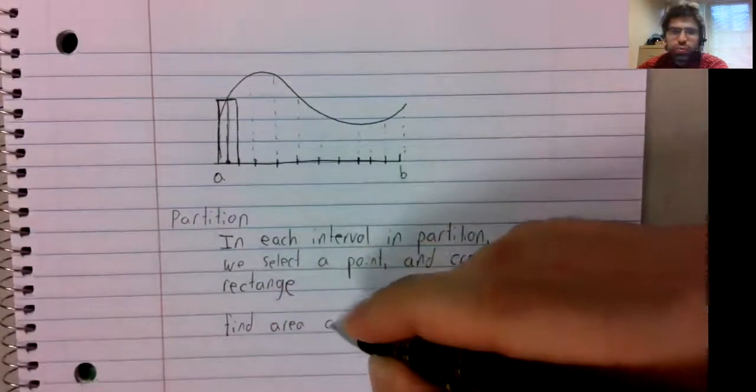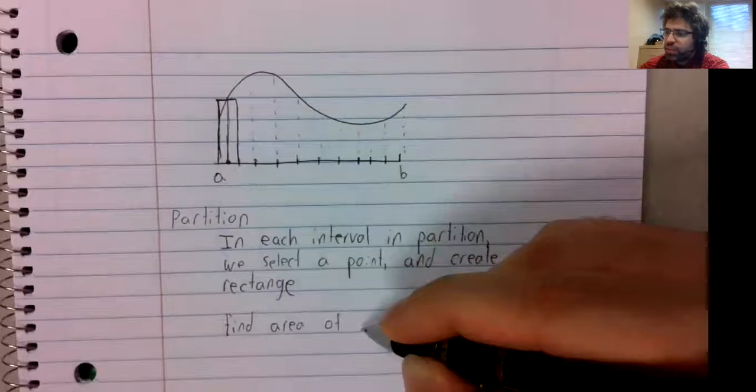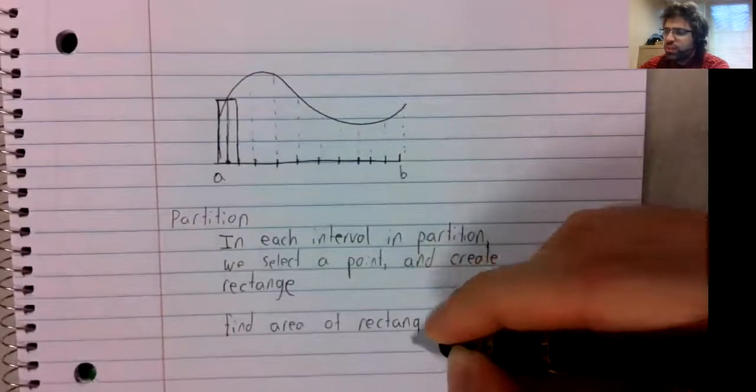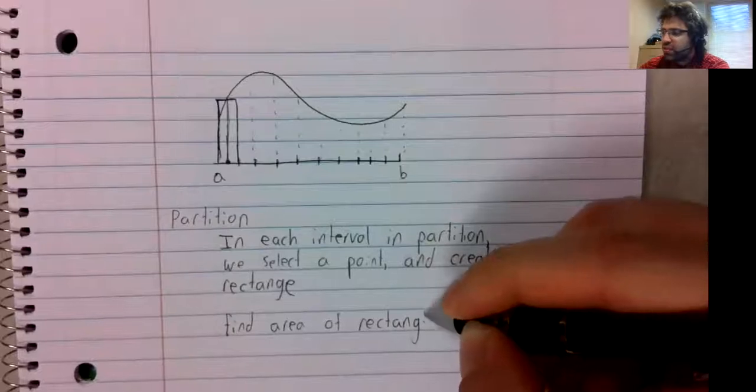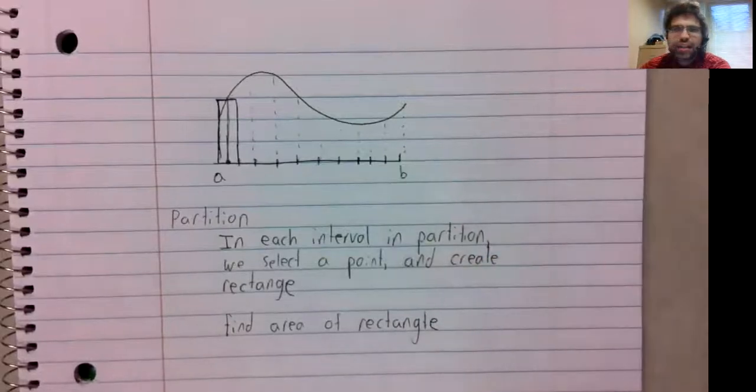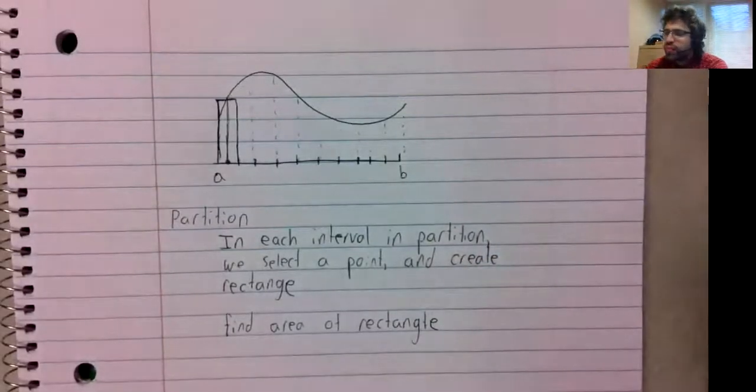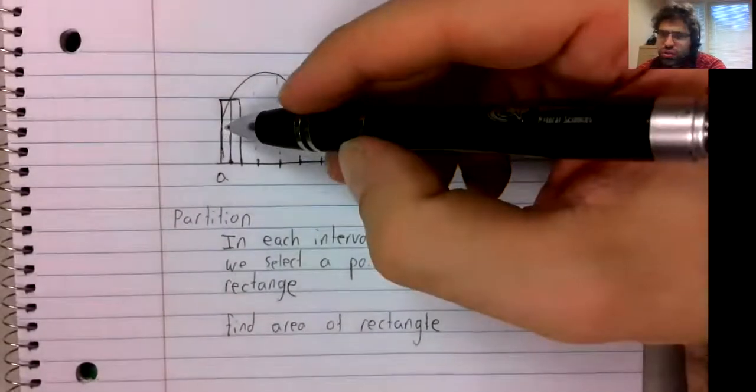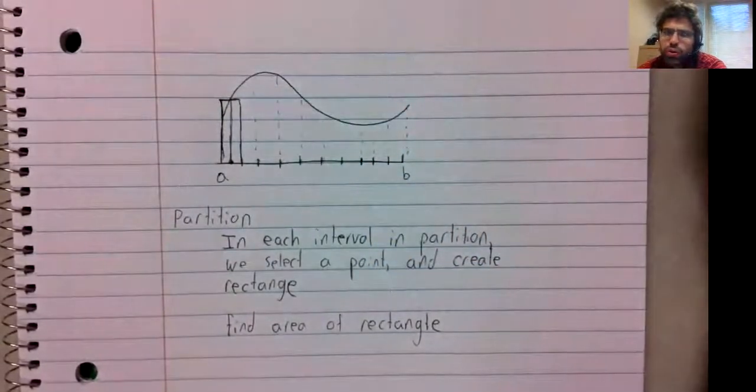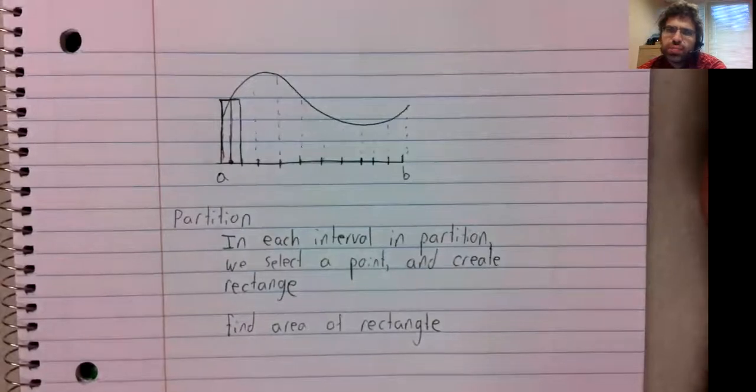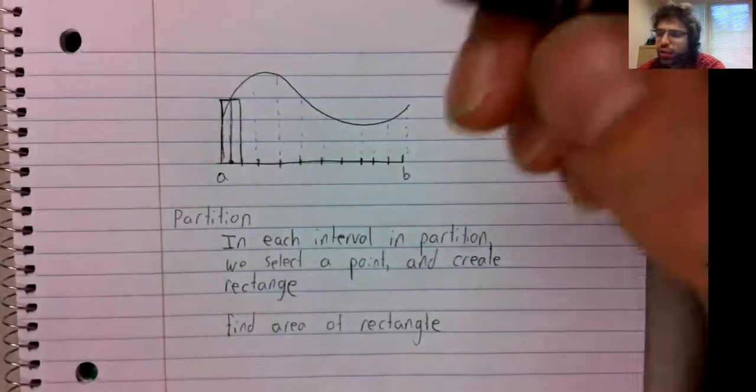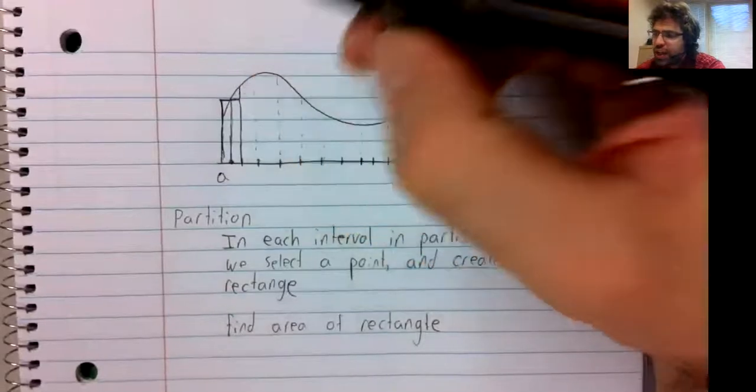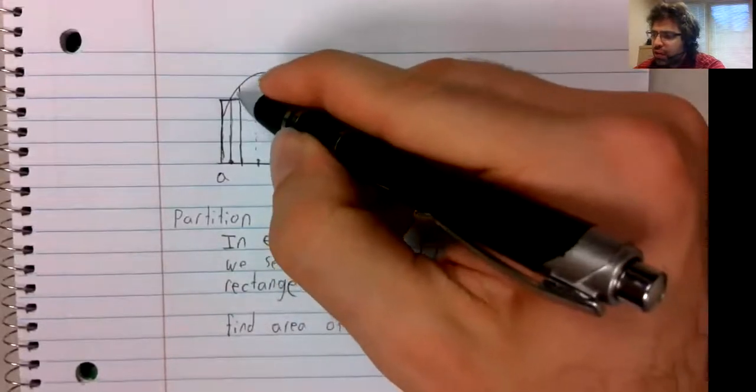We can do that because an area of a rectangle is simply its base times its height. It's easy to do. And the area of this rectangle will not quite be the area we're looking for. The area we're looking for